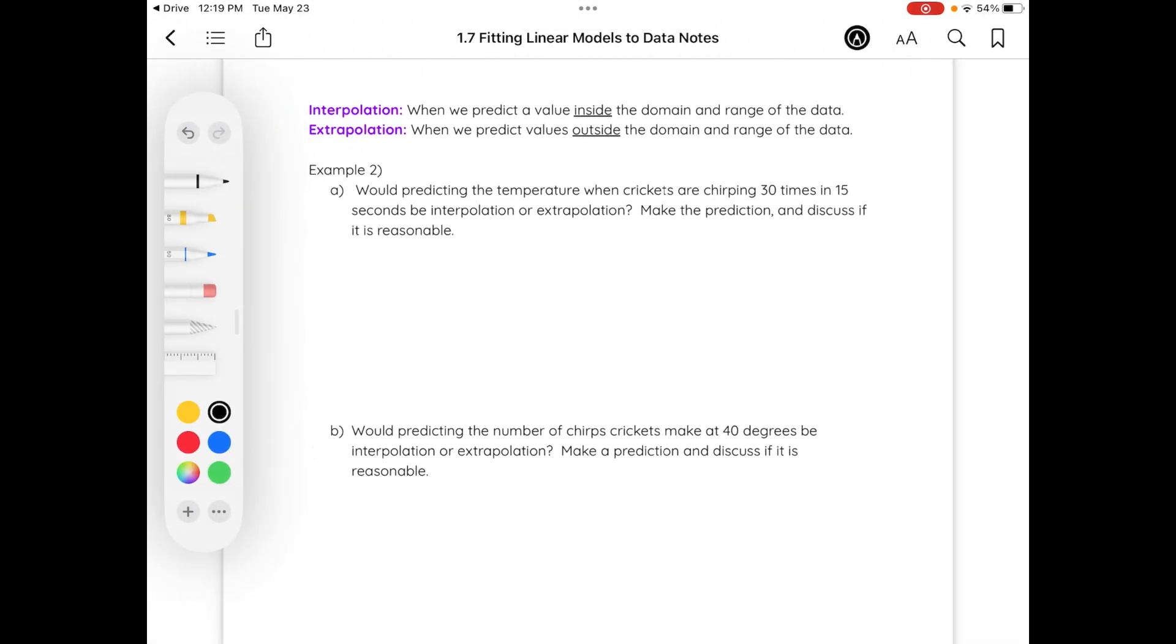When we are predicting a value inside the domain and the range of the data, we call this interpolation. However, if we are predicting values outside the domain and the range of the data, this is what we're calling extrapolation. Would predicting the temperature when crickets are chirping 30 times in 15 seconds be inter or extrapolation?